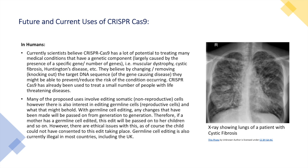Another use includes germline cell editing. Many of the proposed uses for CRISPR-Cas9 today involve editing somatic cells, which are non-reproductive cells. However, there is growing interest in editing germline cells, which are reproductive cells, and what that might hold in the future.